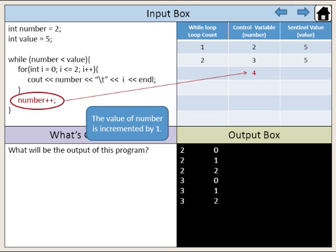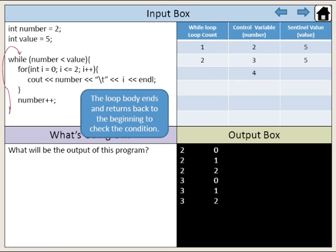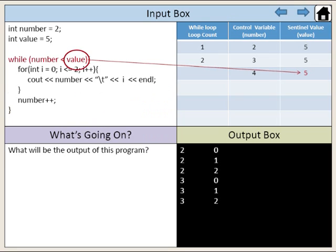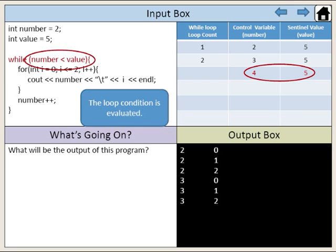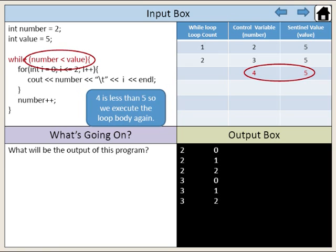The value of number is incremented by 1. The loop body ends and returns back to the beginning to check the condition. Our sentinel value is still 5. The loop condition is evaluated. 4 is less than 5, so we execute the loop body again.